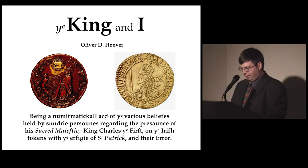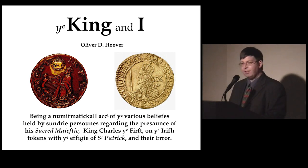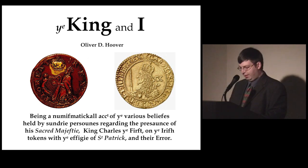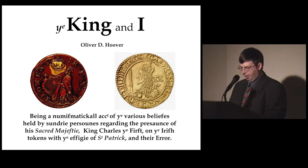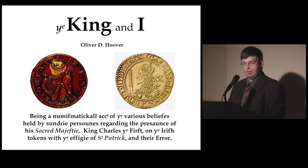My original paper dealt with two specific interpretive problems of the iconography of King David and St. Patrick on the farthings and halfpence that appear with some regularity. But because of the shortness of the time limit for presentations, today I will only speak on the subject of the King David type. Those interested in my views on the St. Patrick types as symbols of the Protestant ascendancy appropriated from Catholic sources will have to wait and read about them in the final publication of the COAC.